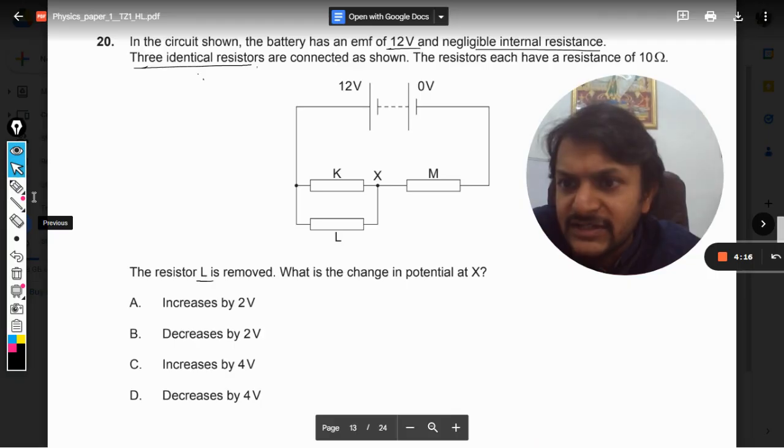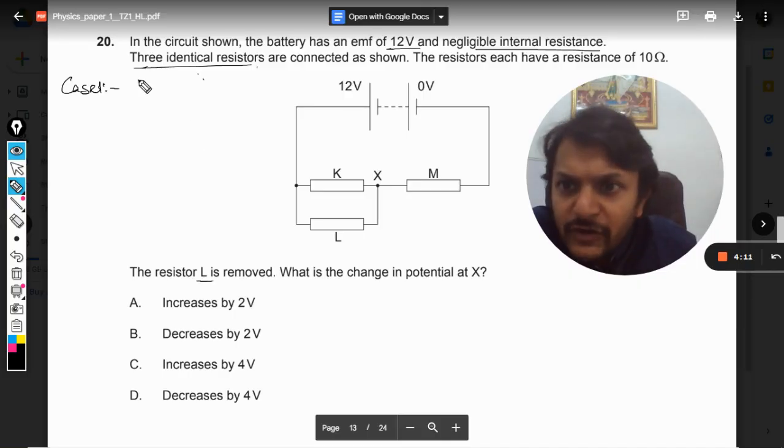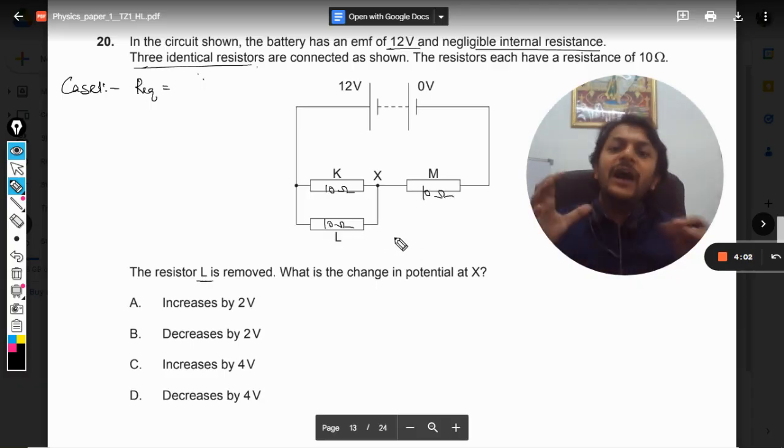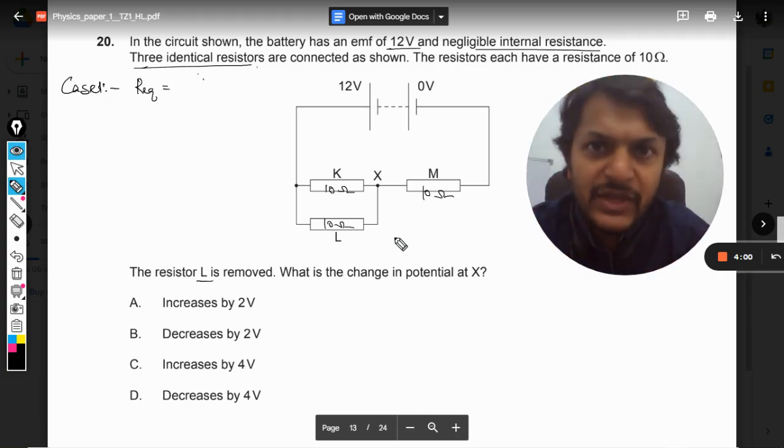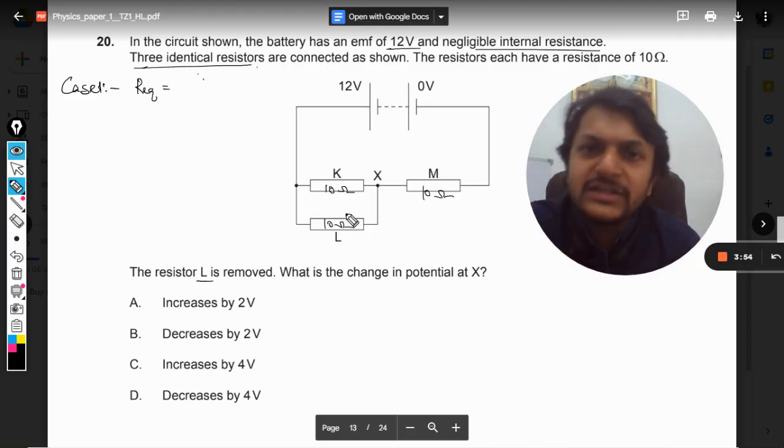So without wasting any time, let us move to this. First of all, it's case number one. We have to find the R equivalent. So now this is 10 ohm, this is 10 ohm, and this is also 10 ohm. So what will be the R equivalent for this system? Now we know that when there are two parallel resistances, and if both of them are equal, the resultant will become half.